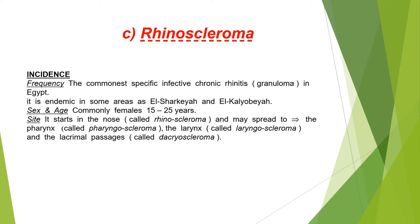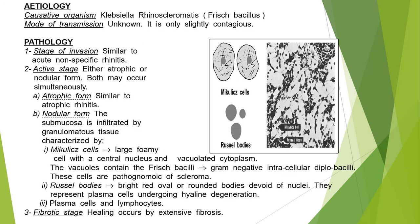Rhinoscleroma is a very important disease because it is the commonest specific infective chronic rhinitis granuloma in Egypt. It is endemic in some areas such as Al-Sharqia and Al-Qalyubia. It is common in females aged 15 to 25 years. It starts in the nose (rhinoscleroma) and may spread to the pharynx (pharyngoscleroma), larynx (laryngoscleroma), and lacrimal passages (dacryoscleroma). It is caused by Klebsiella rhinoscleromatis; the mode of transmission is unknown and it is only slightly contagious.